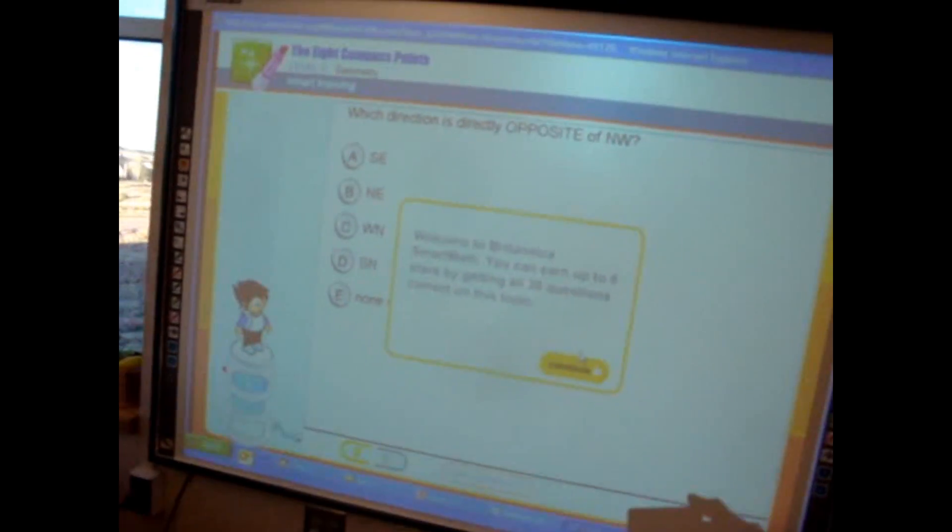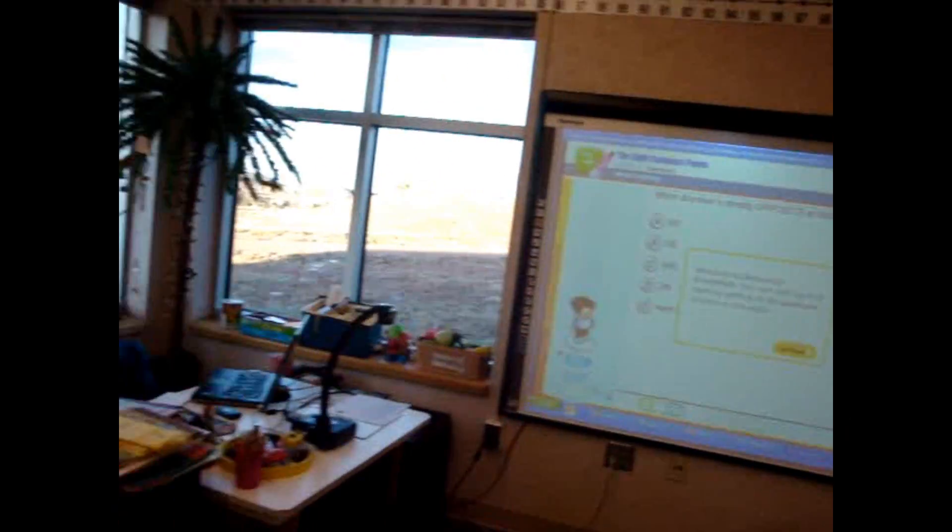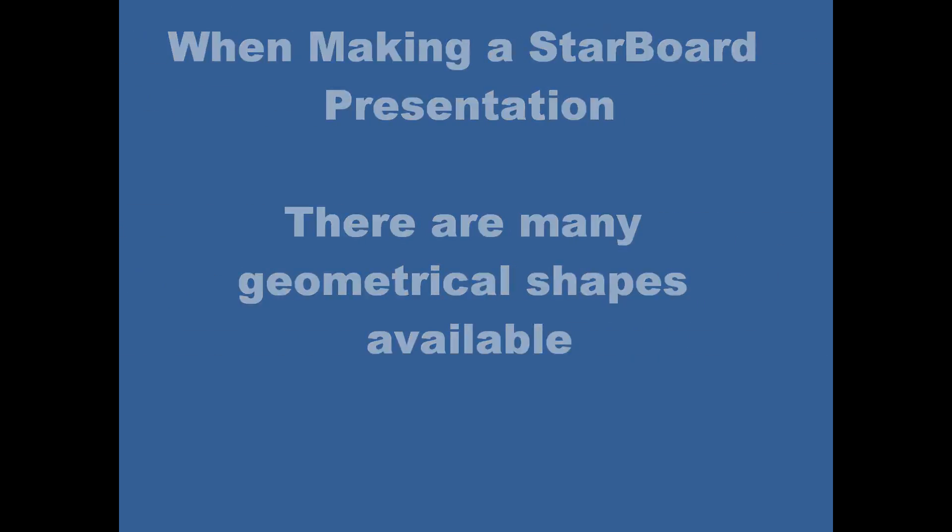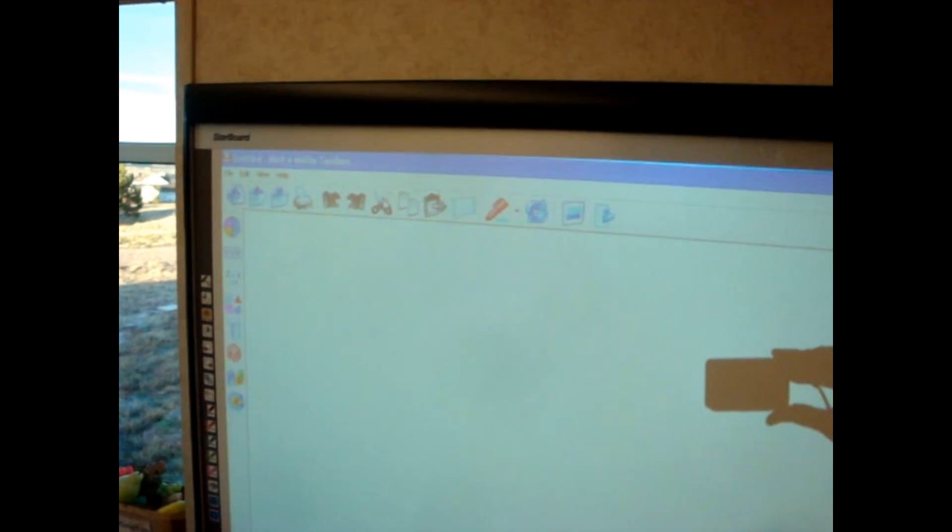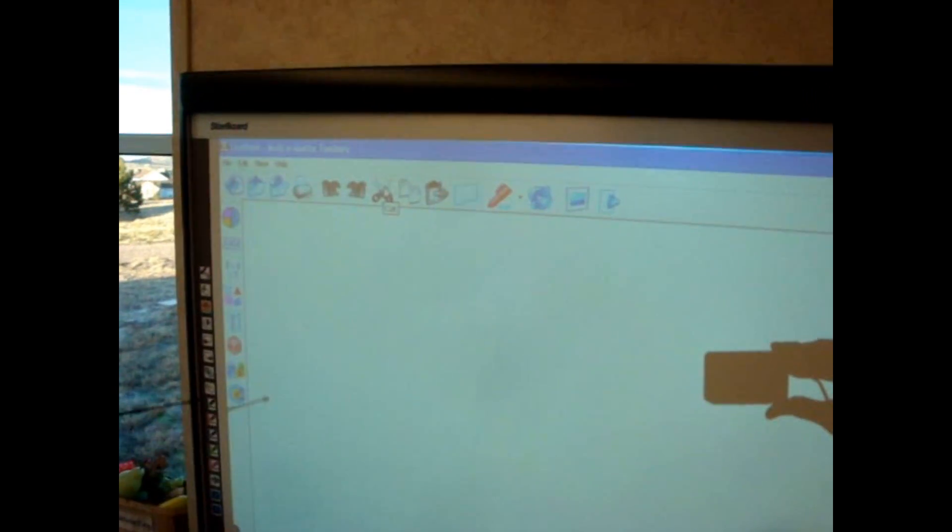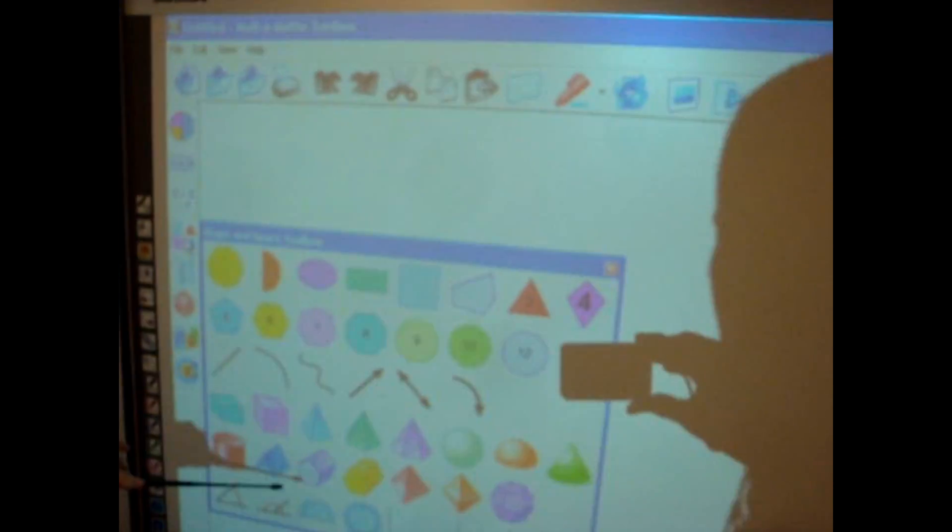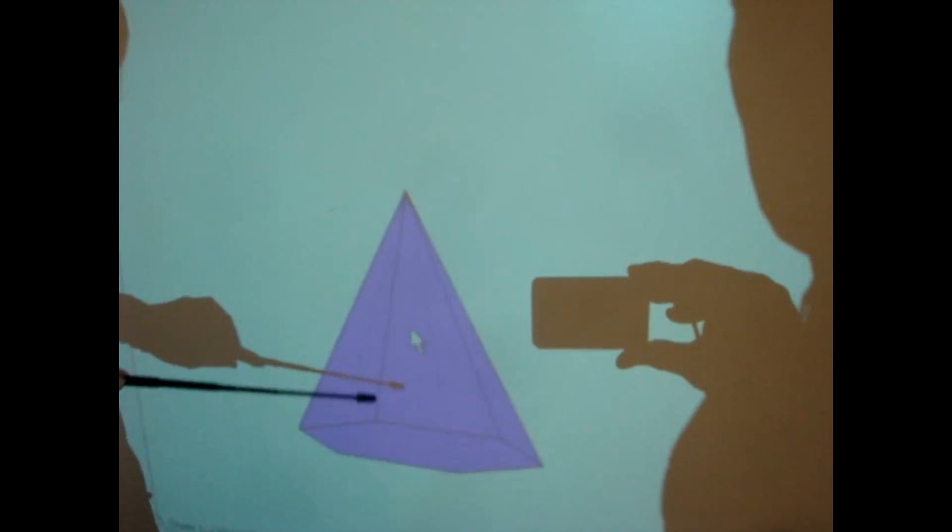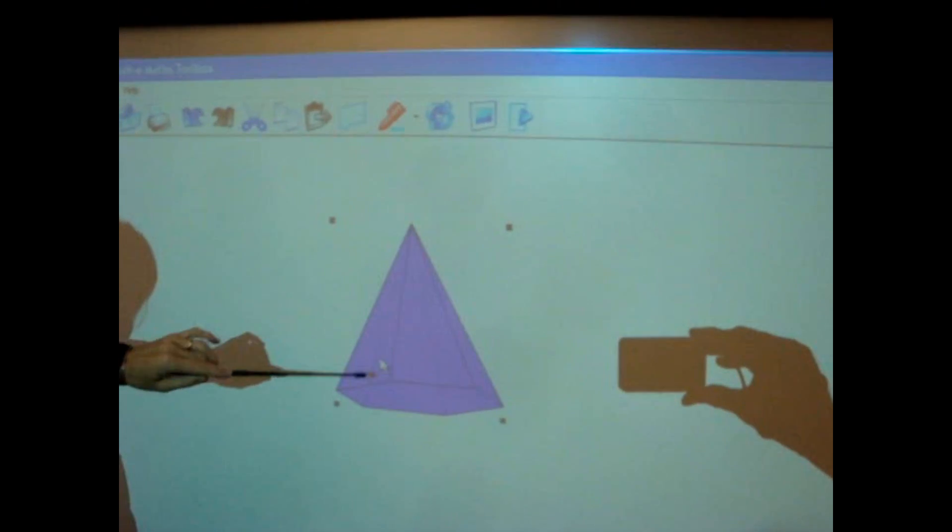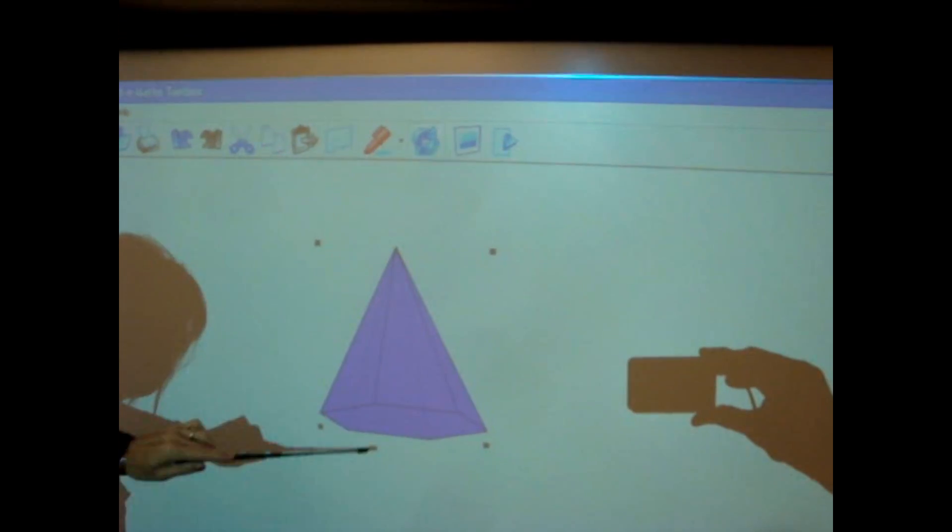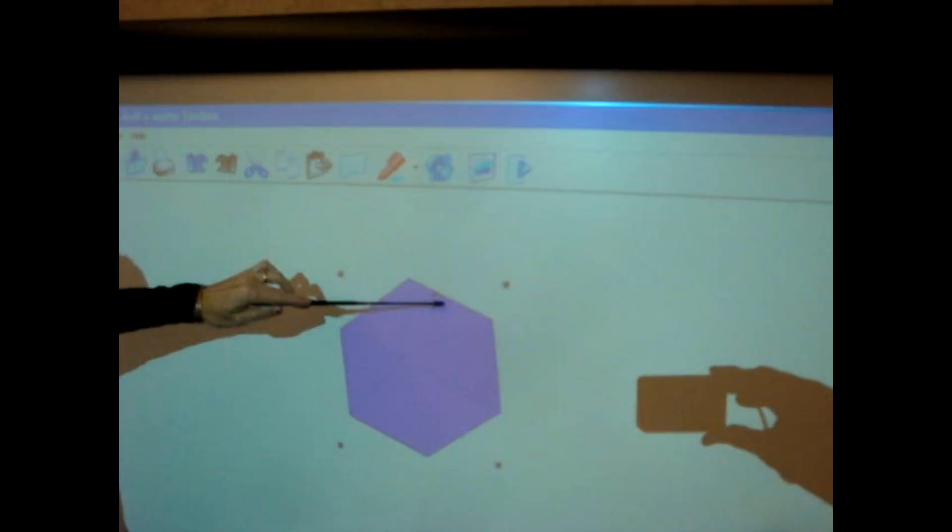So where were those whiteboards? Right here. So each child had a—when you're making a Starboard presentation, there are shapes that are available, and then you can take the shape and move it wherever you want. You can spin the shape.